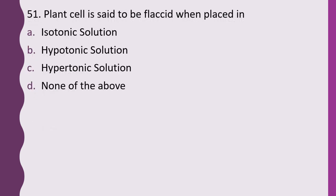Question 51. A plant cell is said to be flaccid when placed in: isotonic solution, hypotonic solution, hypertonic solution, or none of the above. The correct answer is option A — when the plant cell is placed in an isotonic solution, the cell is said to be flaccid.